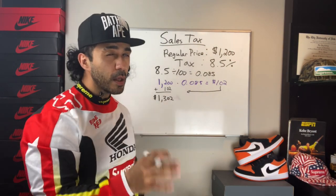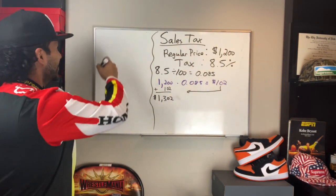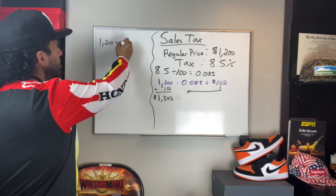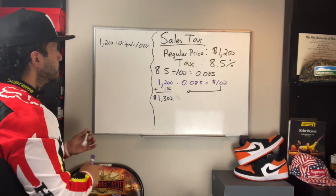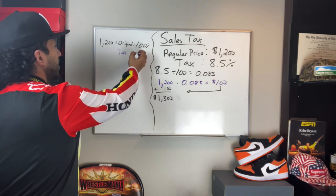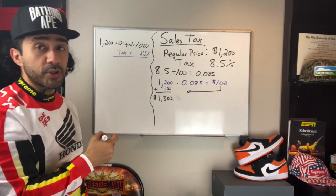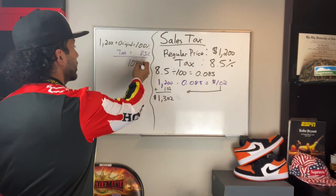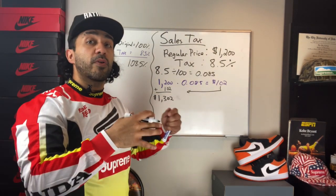That is one way to do it. Another way to do it is using the percent numbers. $1,200 represents the original price, which is 100%. The tax equals 8.5%. If you add 100 and 8.5, you get 108.5%. And why is this important? That is letting you know that your final price is actually 108.5% of the $1,200.